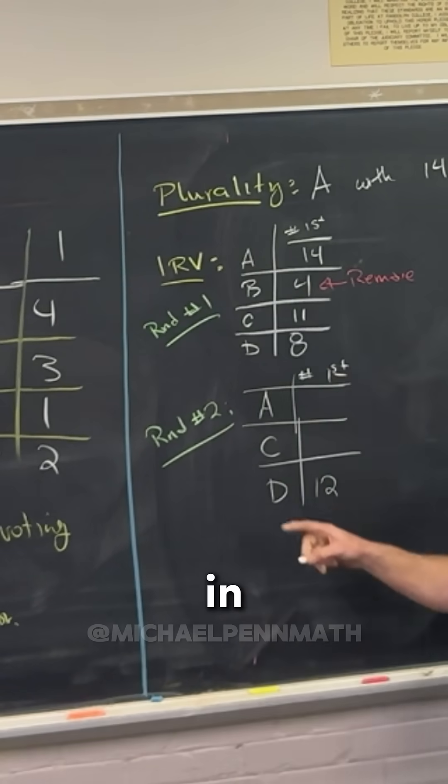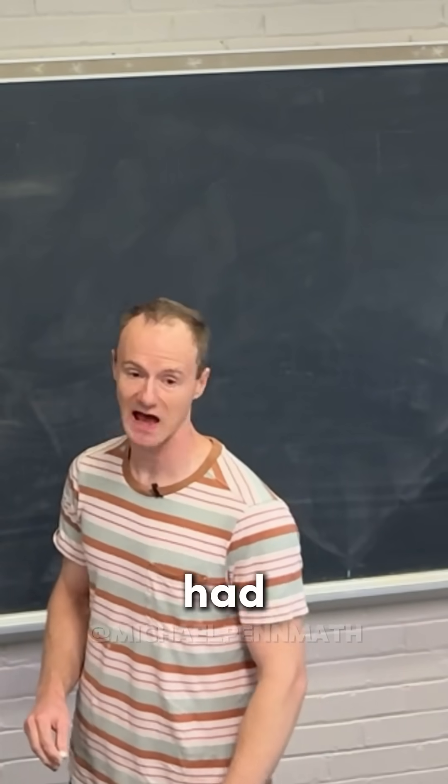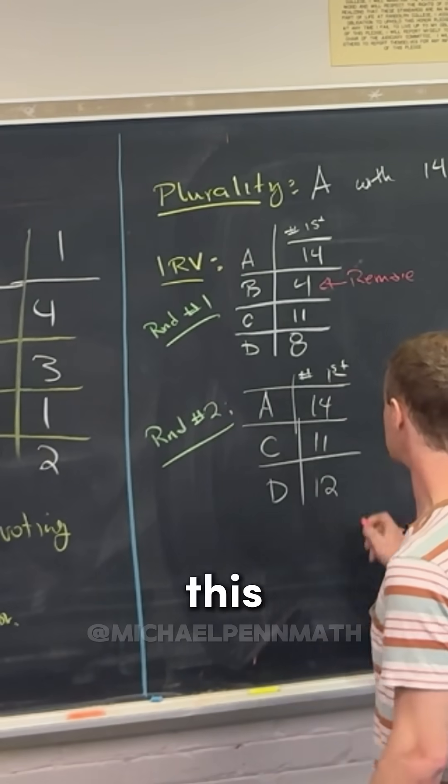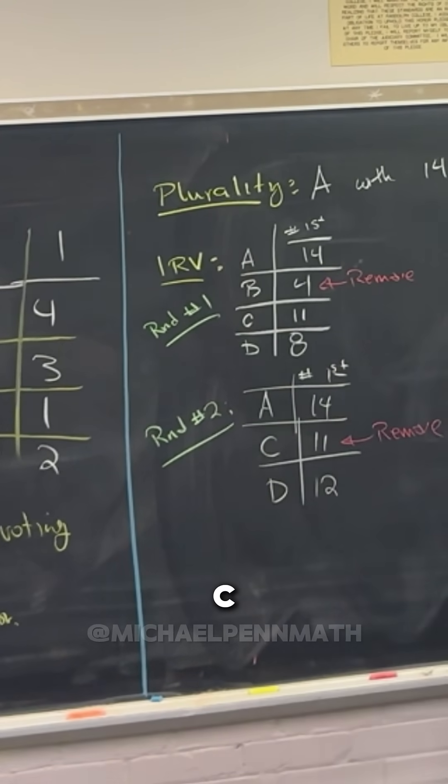Okay. So D is first in 12 because of the removal of B. But then A and C have the same numbers of first place votes as they had before. We've got 14 and 11. So that means in this round, we remove candidate C.